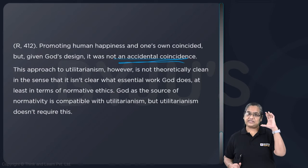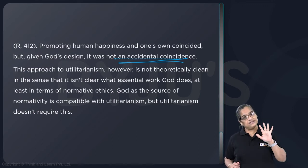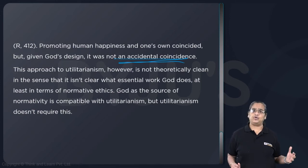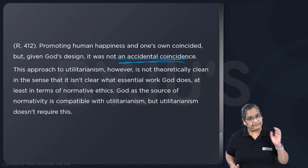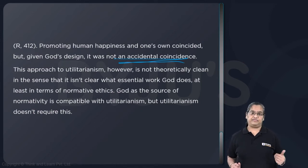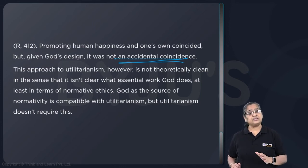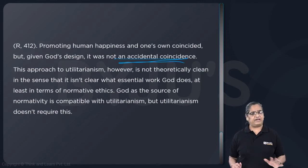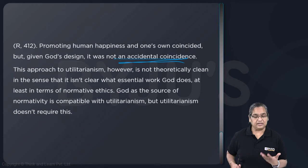So the summary of the passage: it started with what utilitarianism is and how it has its basis in moral and ethical theory. Jeremy Bentham was the first person to give the utilitarian theory, developing concepts already present in ethical theory. Then it covers the theological utilitarians — earlier than Bentham — who said we promote human happiness because it is the will of God. The author concludes that this second theory by Cumberland and John Gay is not very clean in terms of normative ethics.